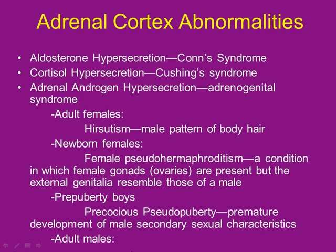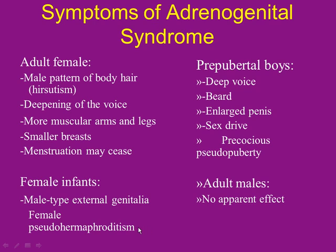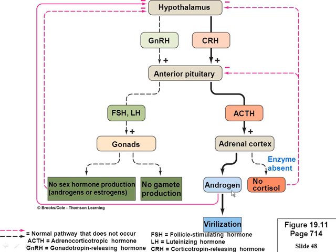In adult males with excess DHEA, there are minimal characteristics. In an adult female: deepens her voice, makes arms and legs more muscular, shrinks breasts, menstruation might stop. It turns down feminine characteristics and turns up masculine ones. With that sex hormone cranking out, you start screwing with the whole CRH-ACTH pathway.